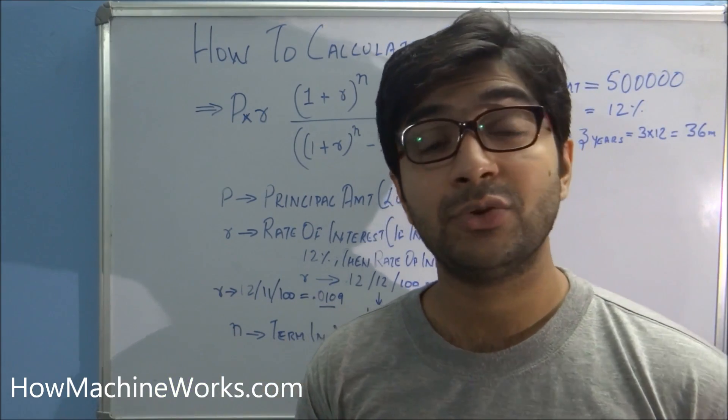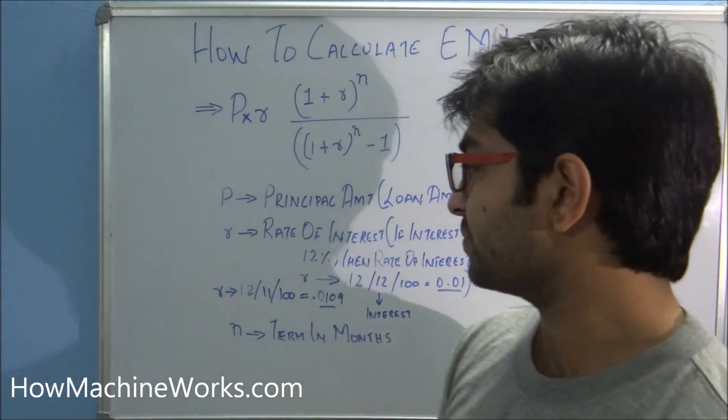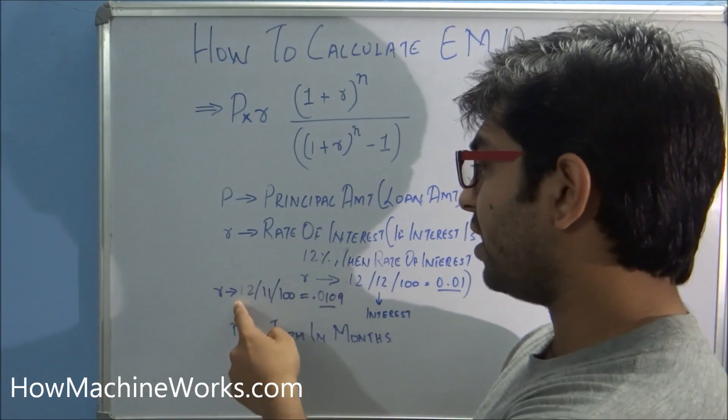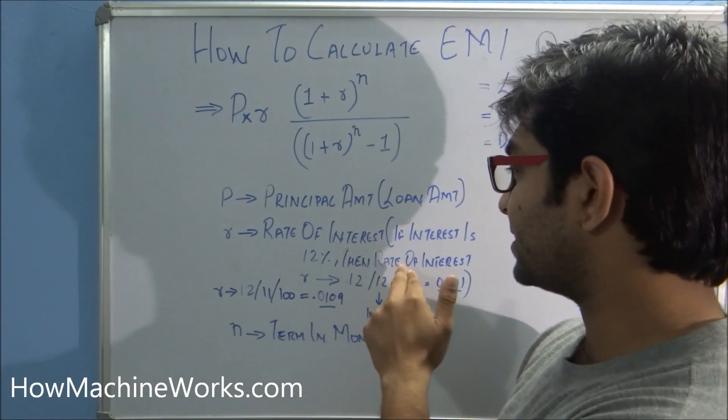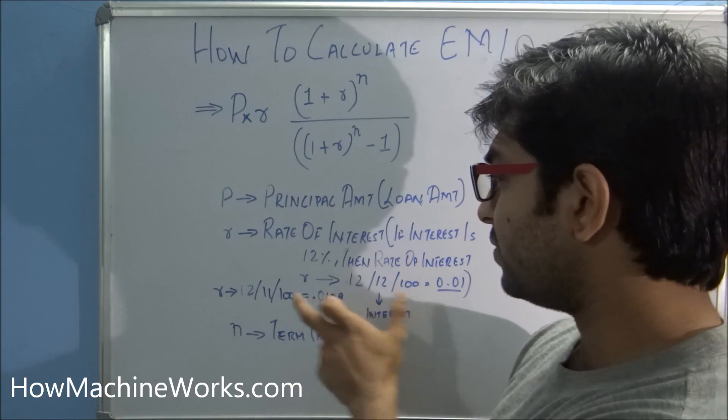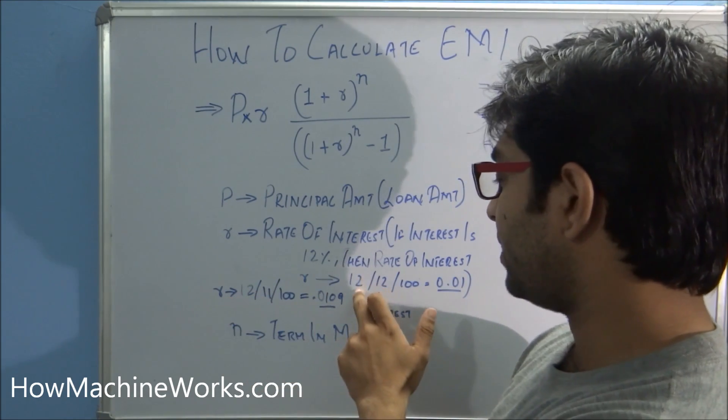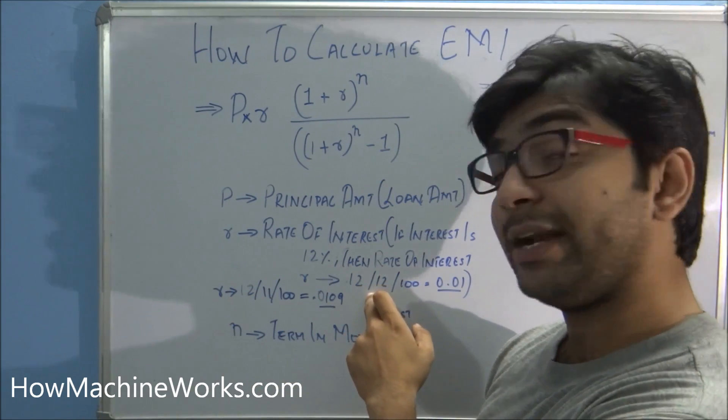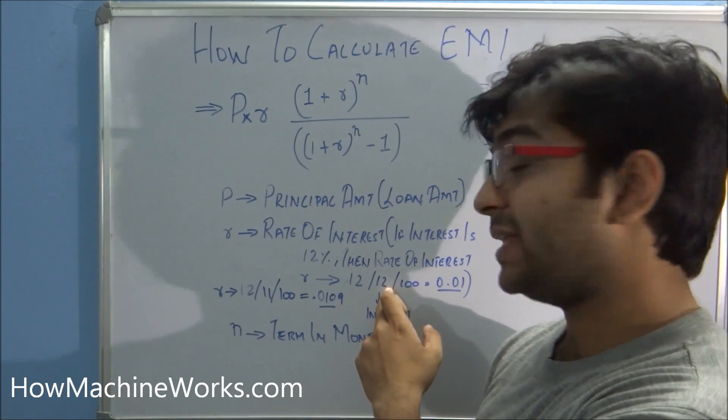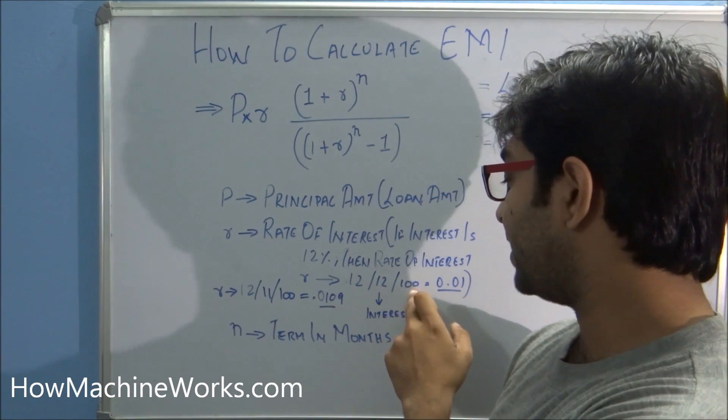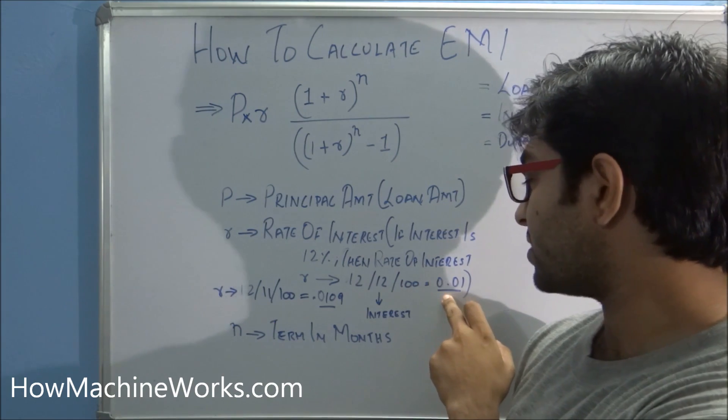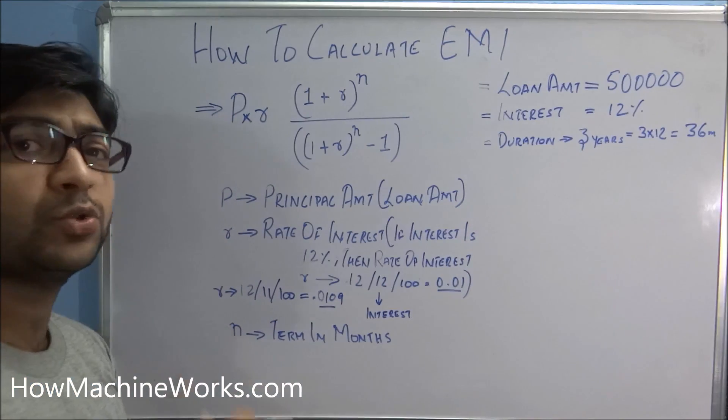And there's a small calculation for the R. If we take 12 percent as interest, then the value that we take for R is 12 months divided by the rate of interest, that is 12 divided by 100, that gives you R as 0.01. So we are taking the interest rate as 12 percentage. So let's do the calculation.